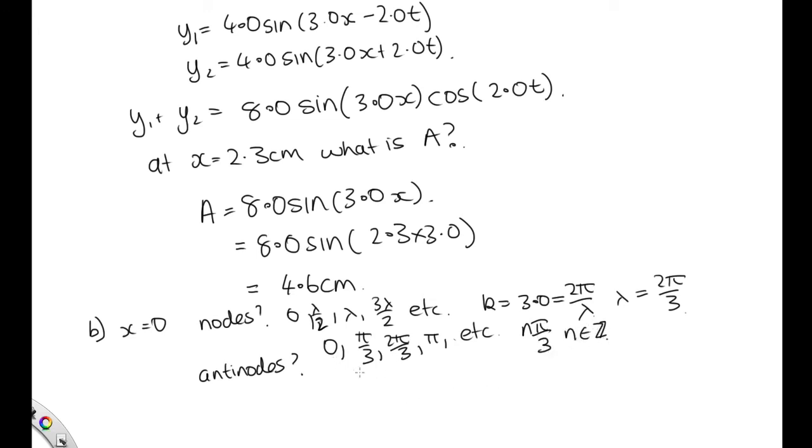The anti-nodes occur halfway between the nodes. They occur at π/6, and halfway between π/3 and 2π/3, which is π/2.